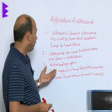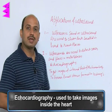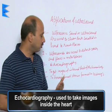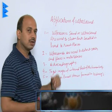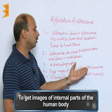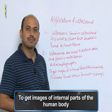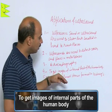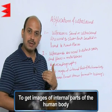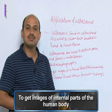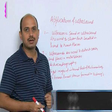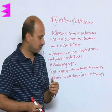Ultrasound is also used in echocardiography to take images inside and of the heart. Additionally, ultrasound waves are sent into the internal parts of the human body and are reflected from places wherever there is a variation in the densities of tissues, allowing us to get images of internal organs that the doctor can then study.